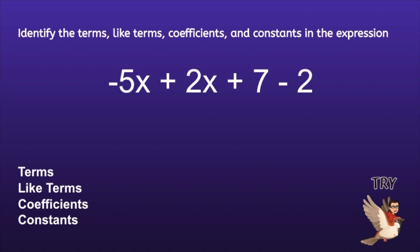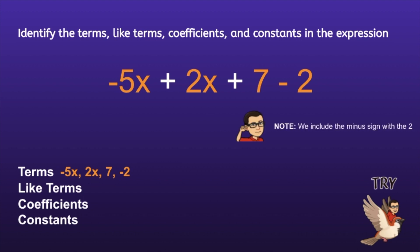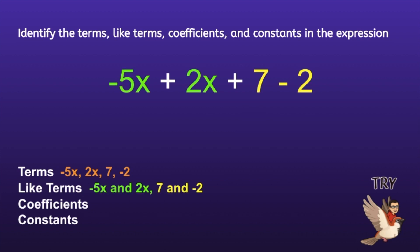Okay, let's check it out. The terms in this expression would be negative 5x, 2x, 7, and negative 2. Note that we include the minus sign with the 2. The like terms in this expression would be negative 5x and 2x, and 7 and negative 2. The coefficients in this expression would be negative 5 and 2, because both of those numbers are in front of the variable x. And lastly, the constants in this expression would be 7 and negative 2.